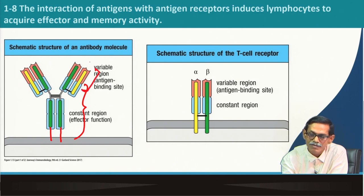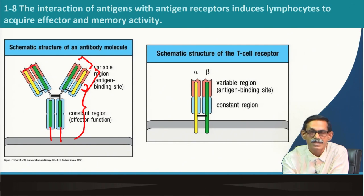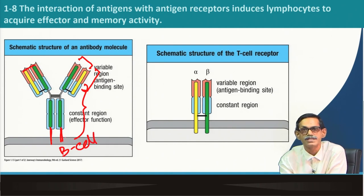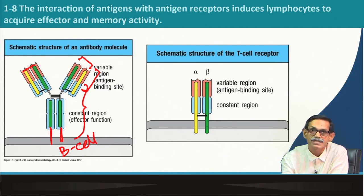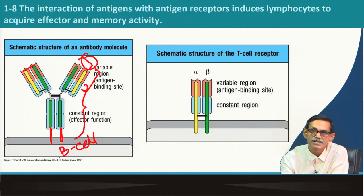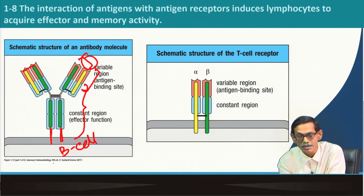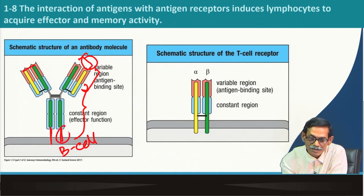The variable region — particularly this side — is responsible for antigen binding. When this Y-shaped molecule is attached to the membrane of the B cell, it is the B cell receptor. After interaction with antigen, it gives signals, and the same cell converts to a plasma cell and produces the same molecule but without the transmembrane part.